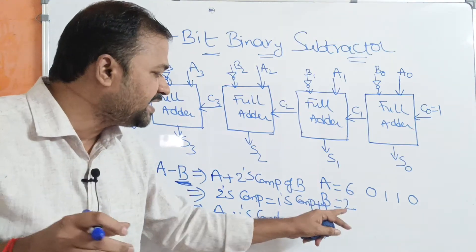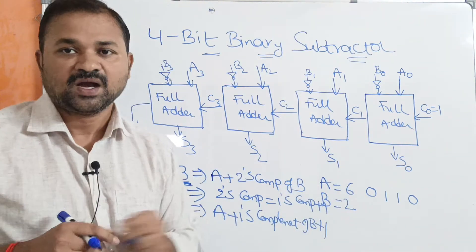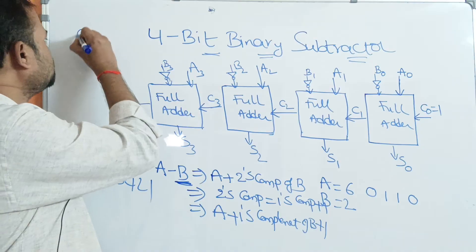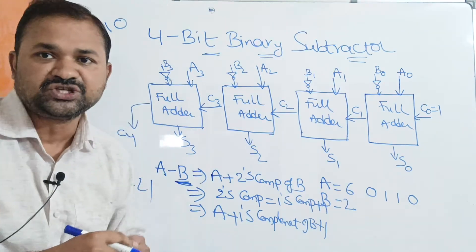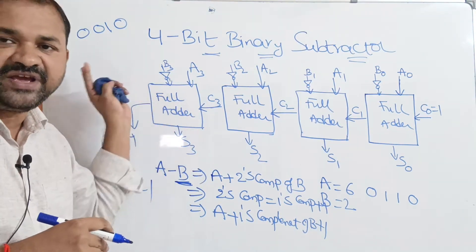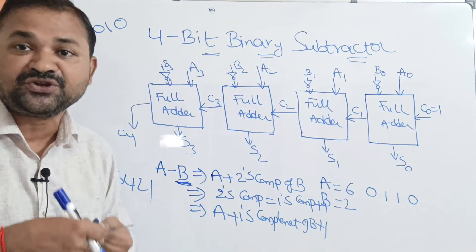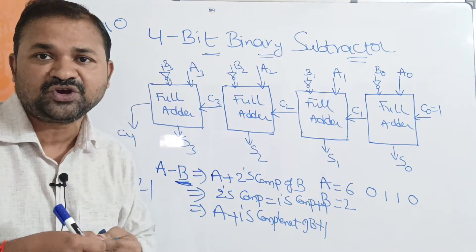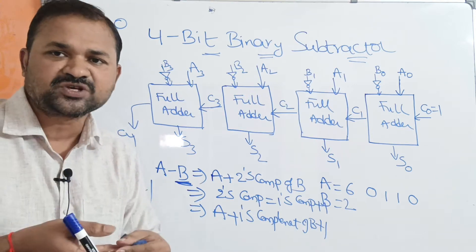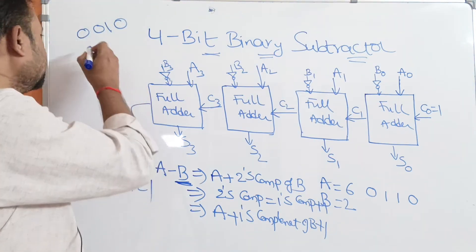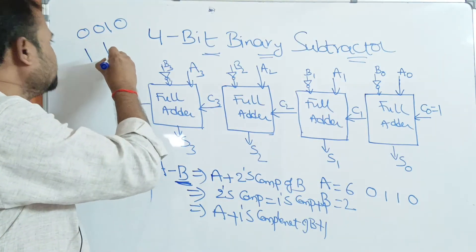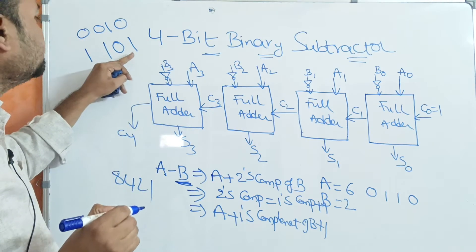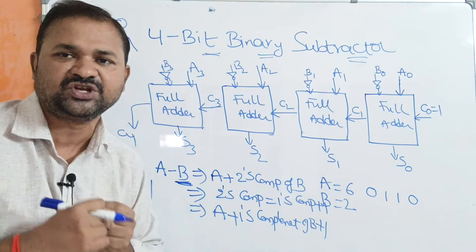Now we have to calculate the 2's complement of 2. How do we represent 2 in binary notation? 2 in binary notation is 0010. Now we have to calculate the 2's complement of 0010. For that, first we calculate the 1's complement of 0010. The 1's complement means 0's are changed to 1's and 1's are changed to 0's. So 0 becomes 1, 0 becomes 1, 1 becomes 0, and 0 becomes 1 — giving 1101 as the 1's complement of 0010.